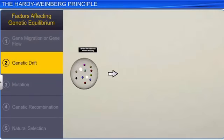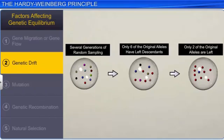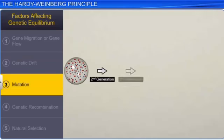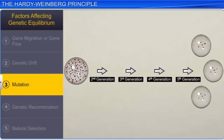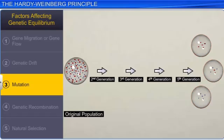Another factor that affects genetic equilibrium is genetic drift, which is a change in the relative frequency with which a gene variant occurs in a population due to random sampling and chance. Mutation is another factor that affects the genetic equilibrium. On some occasions, the change in allele frequency due to mutation is so different in the new sample of the population that they become a different species. In this case, the original drifted population becomes the founder, and the effect is known as the founder effect.